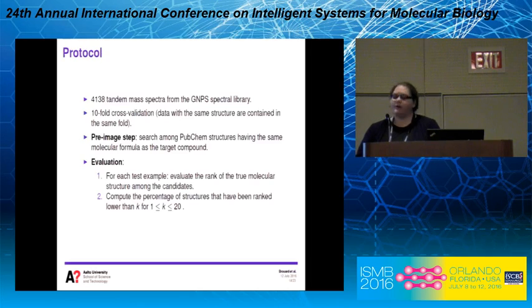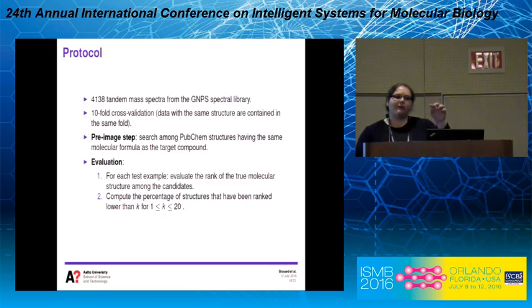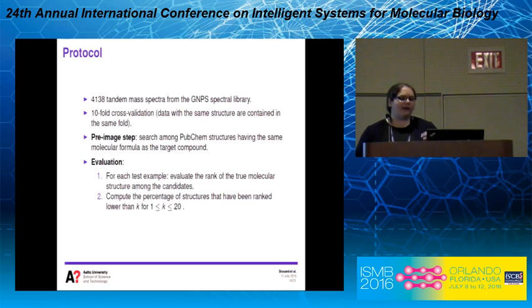For our experiments, we considered approximately 4,000 tandem mass spectra from the public GNPS spectral libraries and performed a 10-fold cross-validation experiment, ensuring that spectra corresponding to the same molecular structure were placed in the same fold to avoid bias. In the pre-image step, we used molecules from PubChem with the same molecular formula. For evaluation, we look at the rank of the true molecular structure in our ranking, compute the percentage of structures ranked at position K or lower, and focus on small values of K — typically between 1 and 20 — since we are not interested in cases where the true molecule is ranked at position 100.